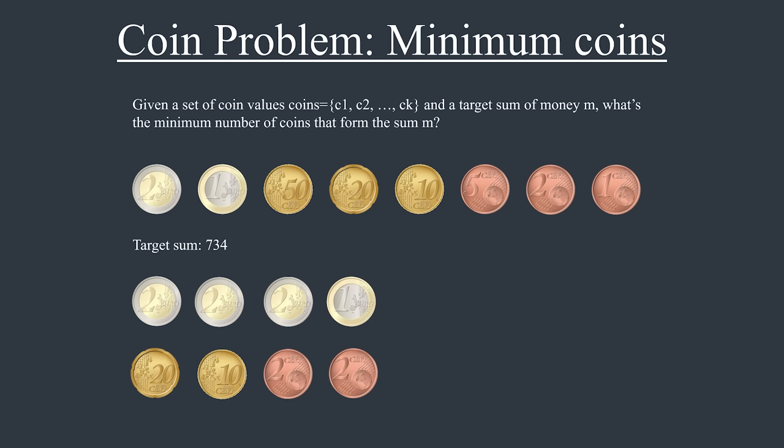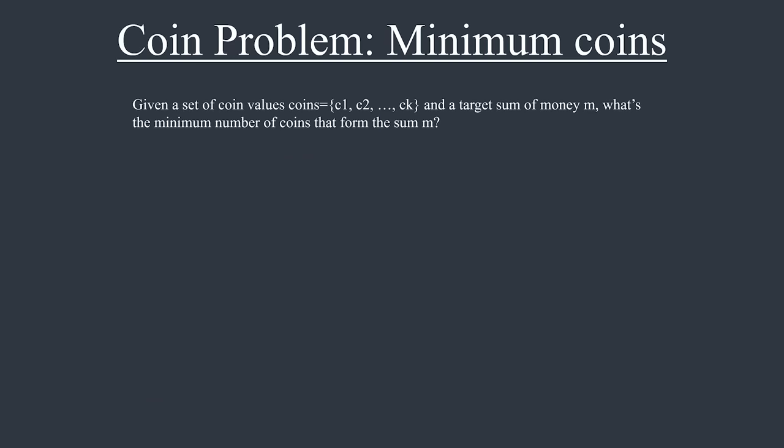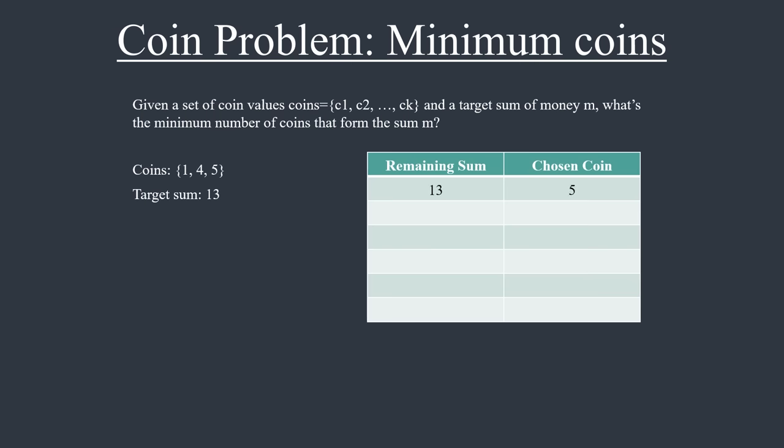Do you notice anything interesting here? Well, we're always choosing the largest possible coin until we get to the target amount. This is called the greedy approach because we're choosing the greediest option every time, and it turns out this works for euro coins. However, it's not immediately obvious that this approach works and actually doesn't work in the general case. For example, imagine that the coins are worth 1, 4, and 5 cents and the target sum is 13. The greedy approach would produce 2 coins of 5 cents and 3 coins of 1 cent, which is 5 coins in total. However, the optimal solution is to use 2 coins worth 4 cents each and 1 coin worth 5 cents.